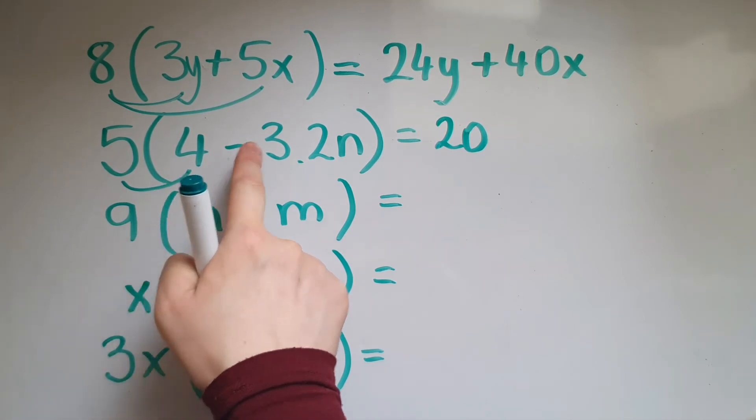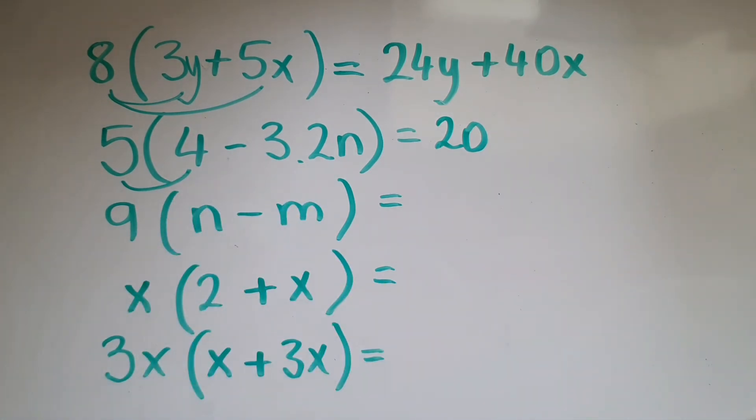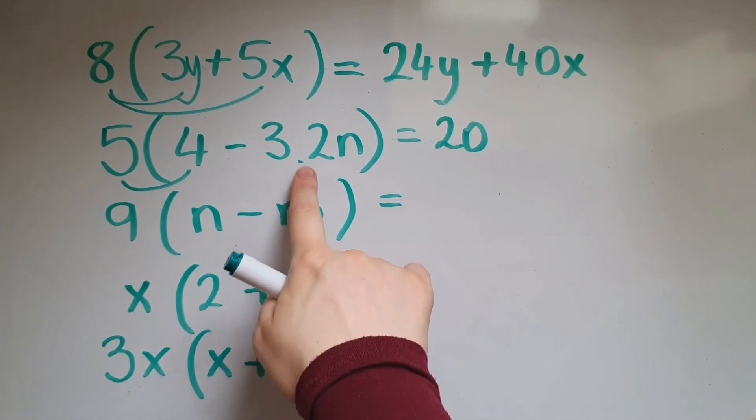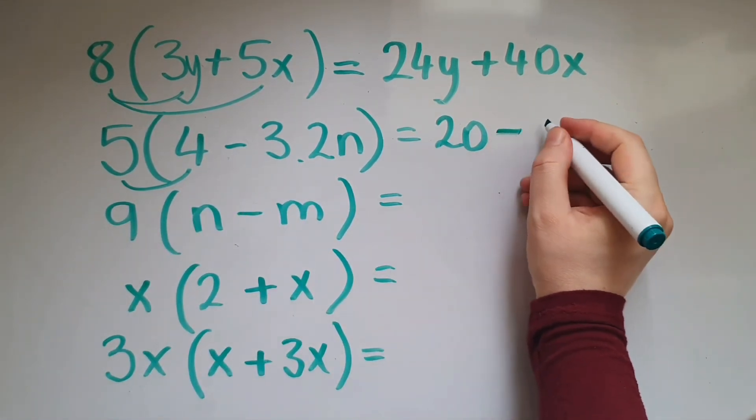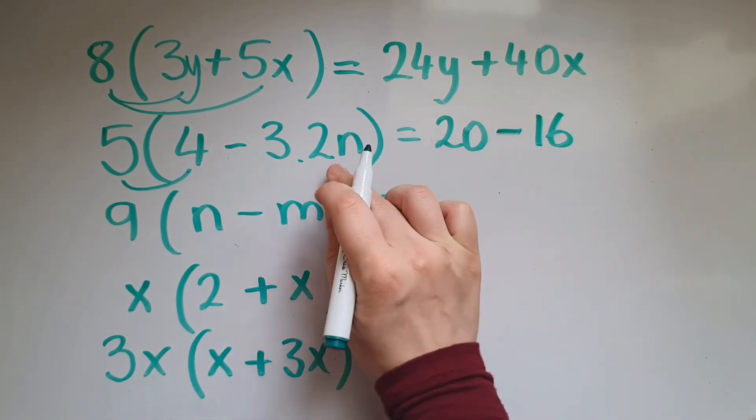5 times negative 3.2n. We'll multiply 5 by negative 3.2. 3.2 times 5 is 16, putting the negative in front, so negative 16n.